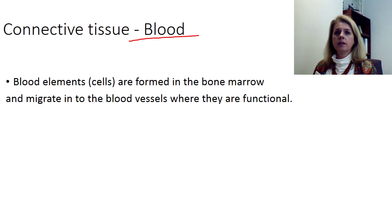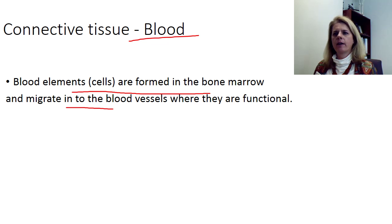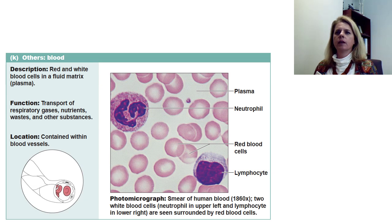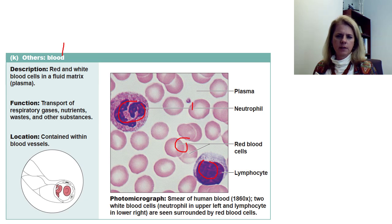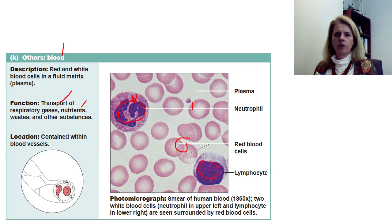Blood is the liquid form of connective tissue. Blood cells are made in the bone marrow, migrate into the blood vessels, and float around in the plasma — which is the liquid matrix of the blood. You can see red blood cells and white blood cells when you look at blood. The function of blood is to transport gases like oxygen and carbon dioxide, transport nutrients, transport electrolytes, and transport everything your body needs. You find blood inside your blood vessels.